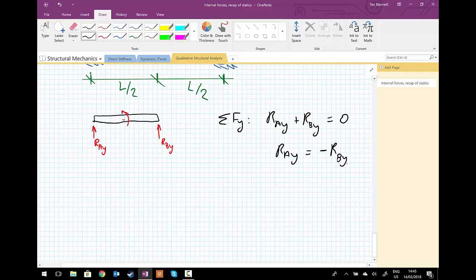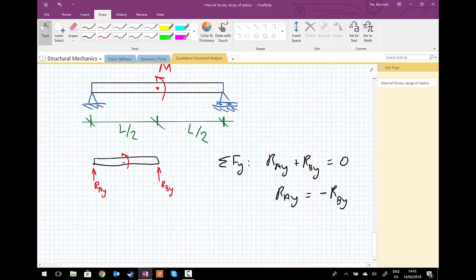That's saying that one of the reactions will point up and one of the reactions will point down. Now, one of the tools we can use in terms of determining which one is pointing up, which one is pointing down, is we can look at one of the ends only.